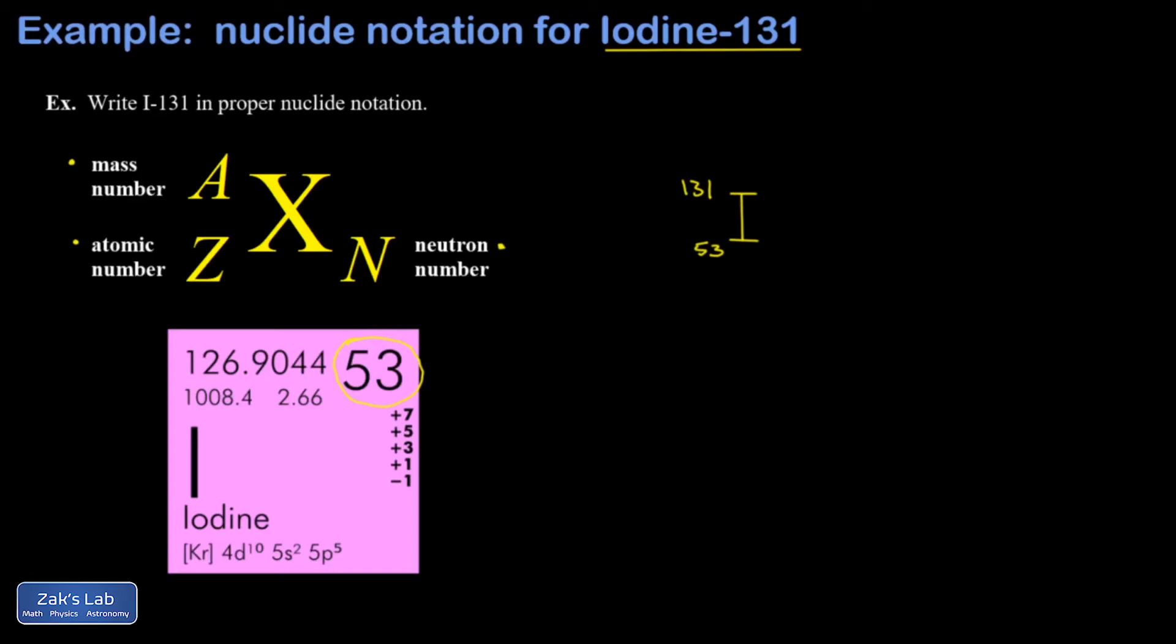If I know the total number of nucleons and I know the number of protons, I can get the number of neutrons by just subtracting. So N is going to be 131 minus 53, that gives me 78 neutrons.